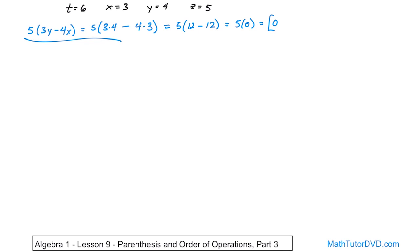The next problem is going to be x times y times z minus 4z. How do we handle that? So we just plug things in: x is 3, y is 4, z is 5, minus 4 times z, which is 5.